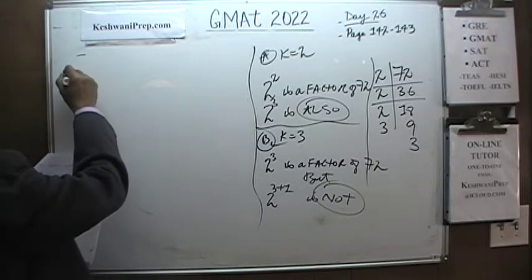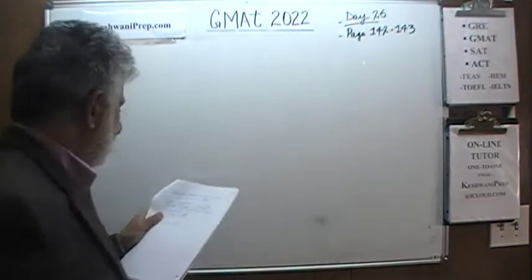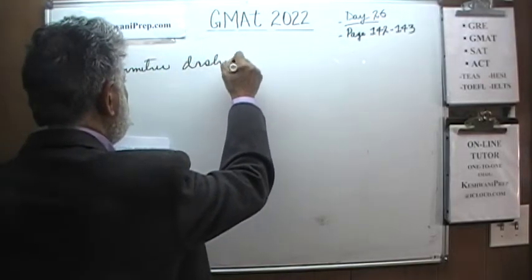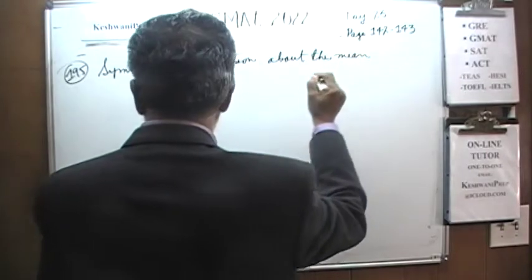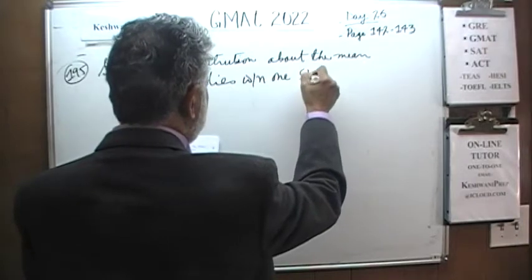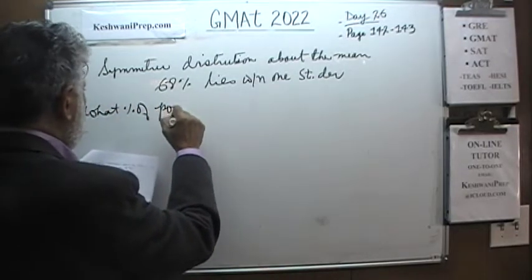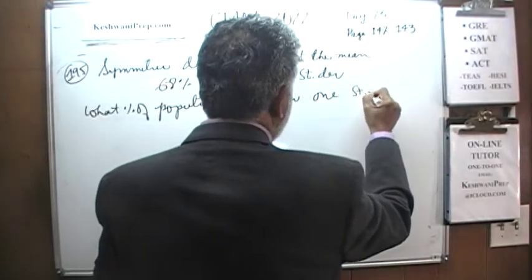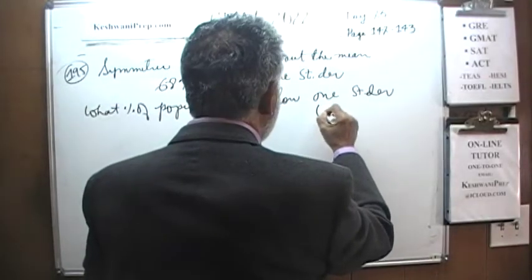Number 195. In problem 195, we are told that we have a symmetric distribution about the mean, and that 68 percent of the observations lie within one standard deviation. The question is: what percentage of the population lies below one standard deviation above the mean — in other words, below mean plus the standard deviation?